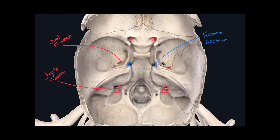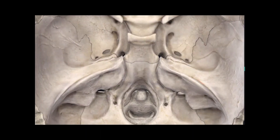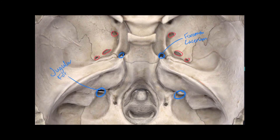We can have a closer view of these spaces by looking at this image. To review: we have the round foramen of the sphenoid bone, the oval foramen of the sphenoid bone, the foramen spinosum of the sphenoid bone, the foramen lacerum made up by the temporal bone and the sphenoid bone, the jugular foramen, and we can also see the condyloid canals, which were discussed in the video on the anatomical landmarks of the neurocranium.